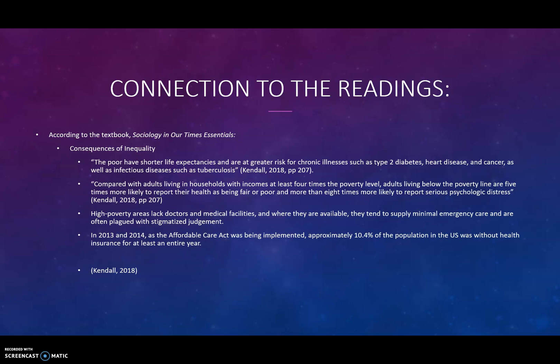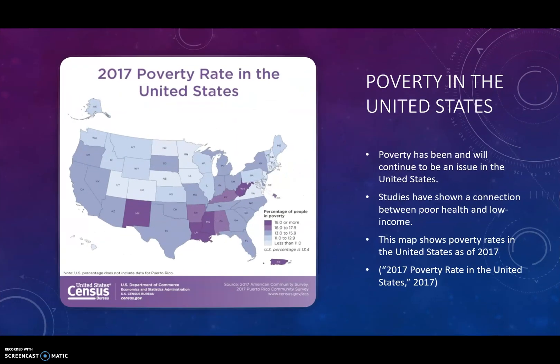In 2013 and 2014, as the Affordable Care Act was being implemented, approximately 10.4% of the population in the U.S. was without health insurance for at least a year. Poverty in the United States is an issue and will continue to be an issue until changes are made. Studies have shown a connection between poor health and low income. This map here shows the poverty rates in the United States as of 2017. The average percentage across all of the United States was 13.4%.